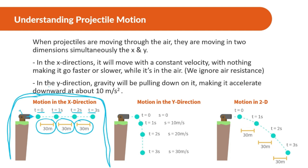In the Y direction, gravity is pulling down on it, making it accelerate downward at about 10 meters per second squared. This is the same as free fall. If the ball is shot out horizontally, at the very beginning the speed in the Y direction is zero. Then it goes 10 meters per second faster each second — so 10, then 20, then 30. Every second, it changes speed by 10 meters per second.